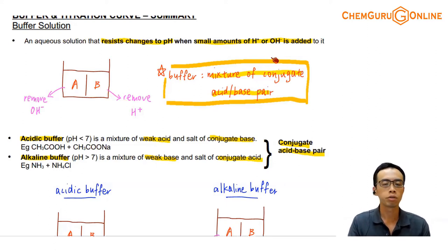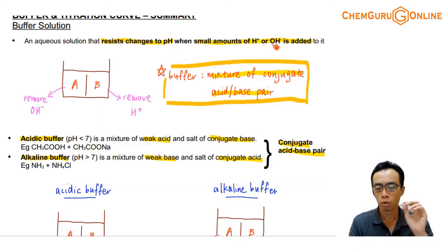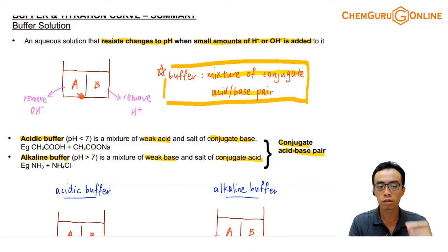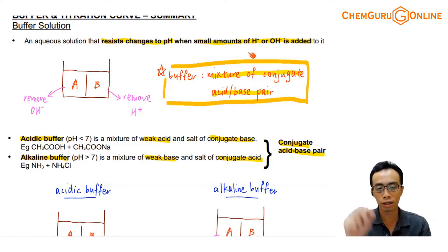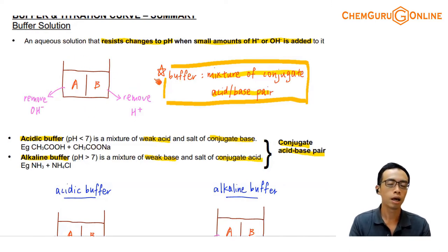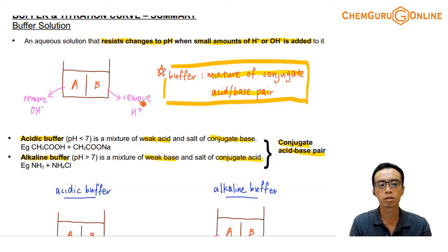Similarly, if you add OH-, it will cause the pH of the solution to go up — it will make the solution more alkaline. So if this buffer solution can maintain pH when you add OH-, this must mean inside this buffer there's an acid, and the function of this acid is to remove OH-. When you add the OH-, the acid will remove it, so therefore it will maintain the pH. Therefore, a solution that can maintain pH when you're adding H+ and OH- is simply a mixture of an acid and base — the job of the acid is to remove OH-, and the job of the base is to remove H+. So a buffer is just a mixture of acid plus base.